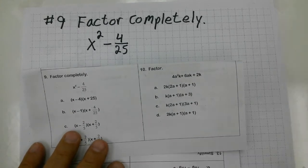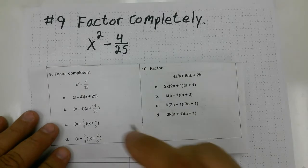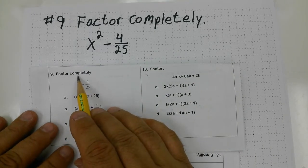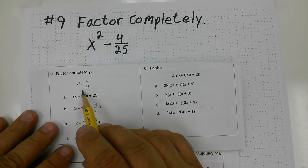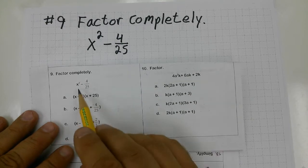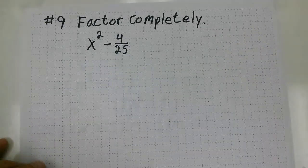For number nine on the PERT practice test, I'm asked to factor completely, and this is a difference of two perfect squares, so I'm asked to factor completely the binomial.